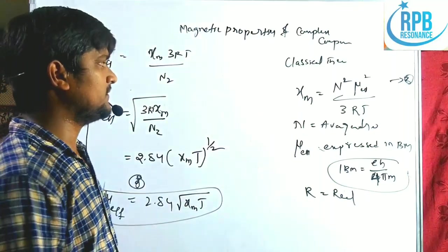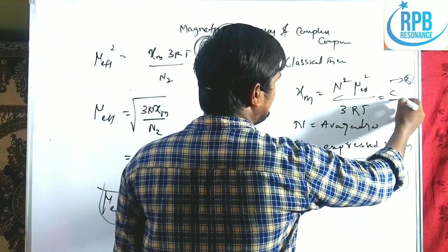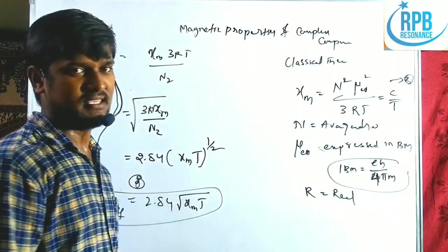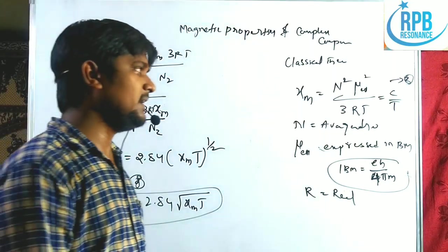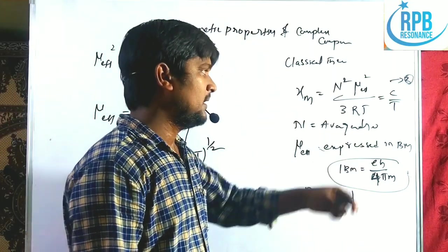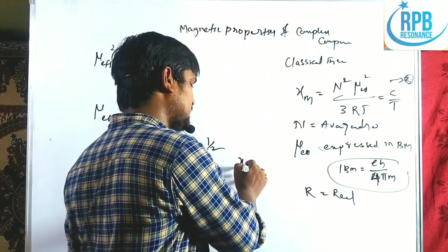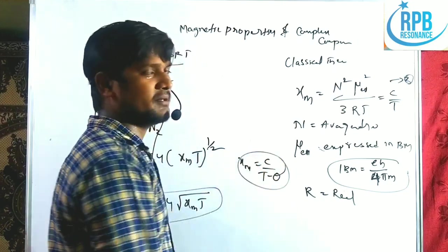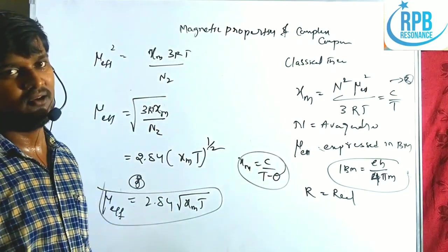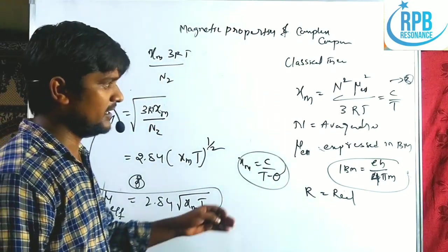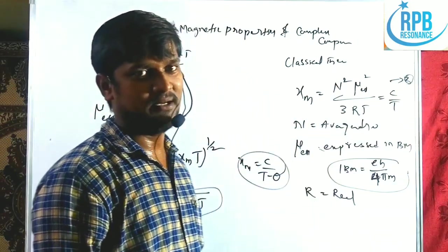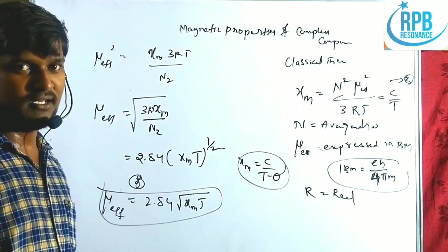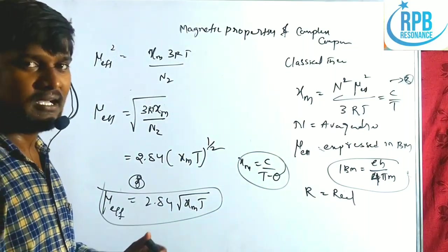The molar susceptibility is also replaced by the term C/T, which is Curie's law. This is further modified to Xm = C/(T − θ), which is the Curie-Weiss law. Curie temperatures will be discussed in the next lecture on spin crossover and magnetic properties of solids.